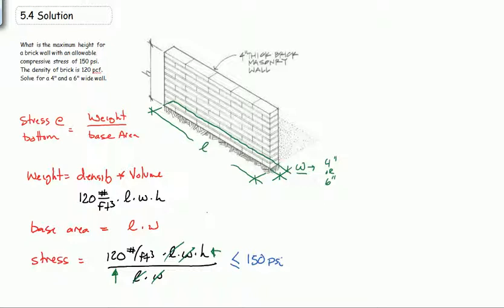Unfortunately, we have conflicting units here. So we have to get this in the same units. 150 psi is equal to 150 pounds per inch squared times 12 inches per foot squared. And that gives me 21,600 pounds per foot squared.